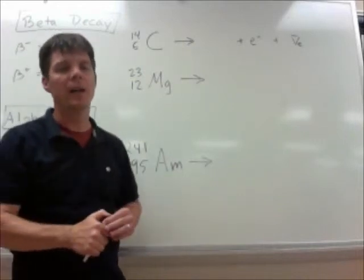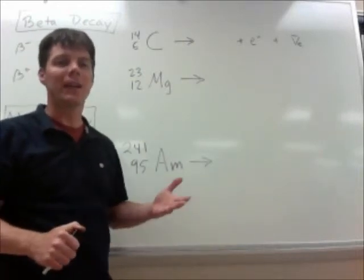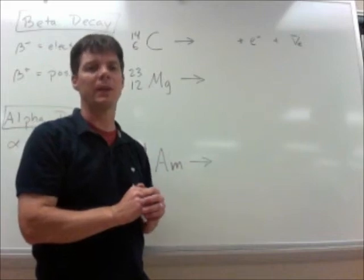Okay, so that's our symbol for the electron anti-neutrino. The final thing is to figure out, well, what is the transmutation? What's the other element that's being produced?